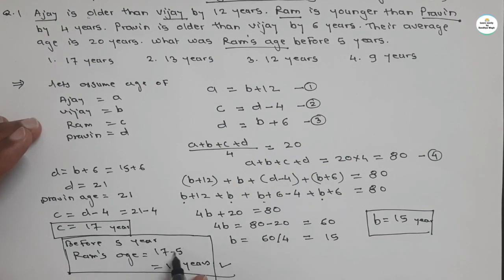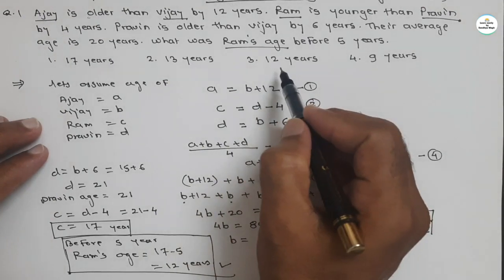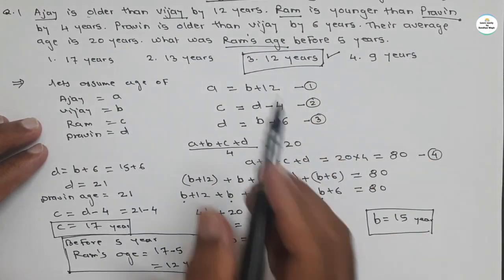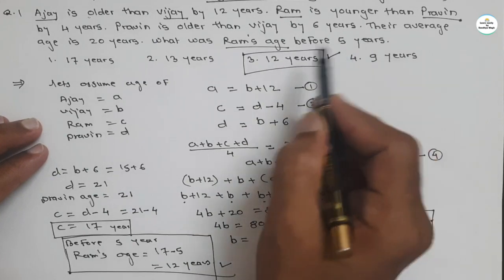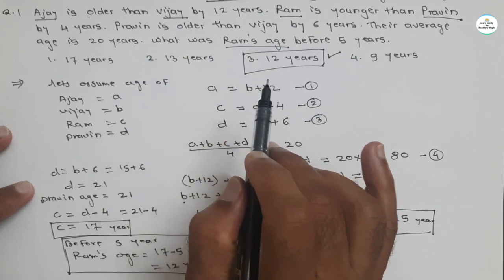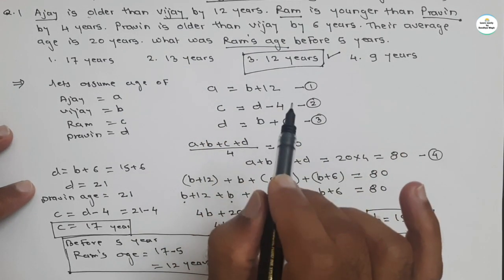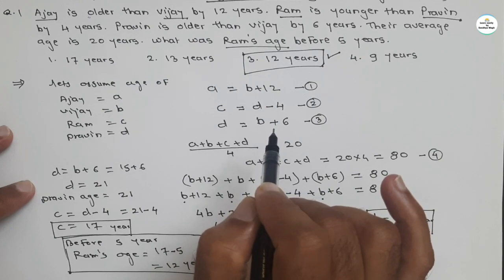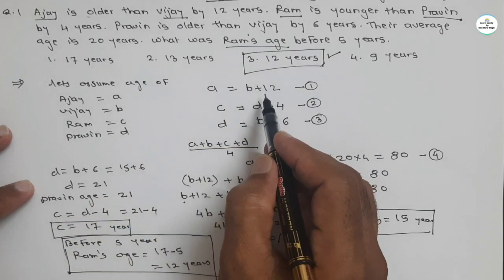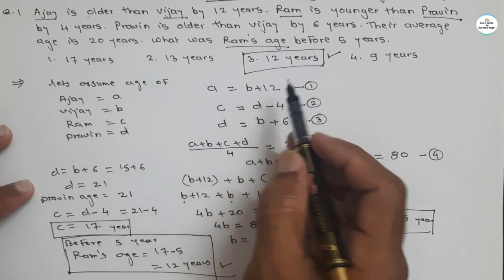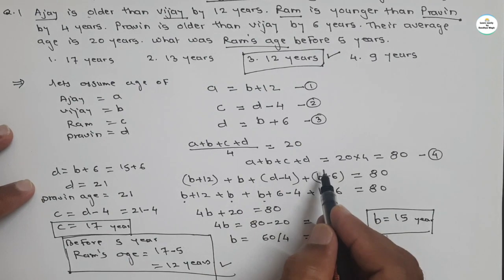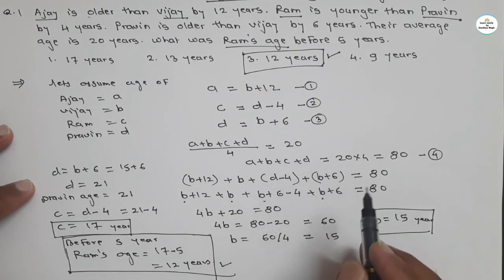So the correct answer is option C — Ram's age before 5 years is 12 years. The technique: first consider the variables, then derive all equations, then convert all equations into one variable. Once you get the value of that variable, the remaining variables can be calculated easily to find the answer.